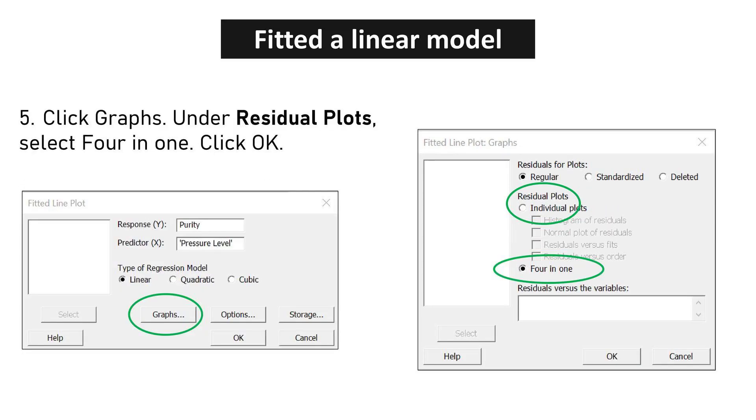Click Graphs. Under Residual Plots, select 4 in 1. Click OK.